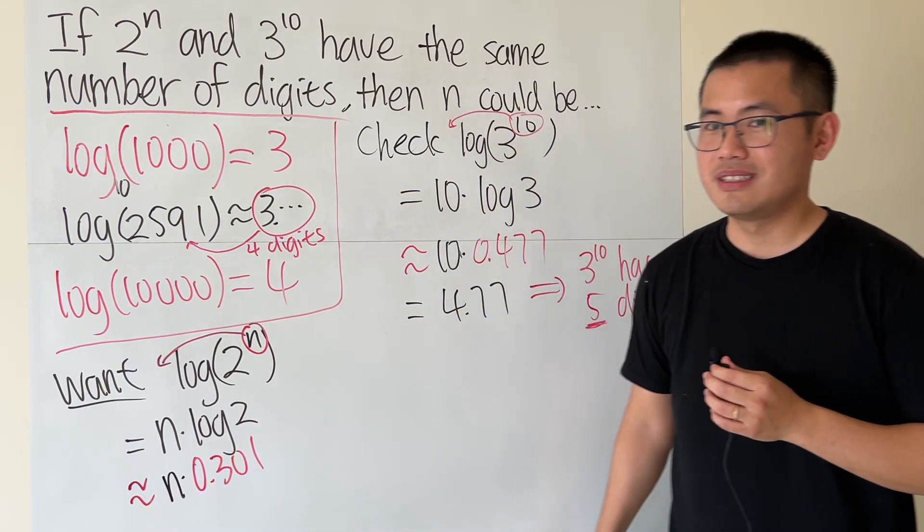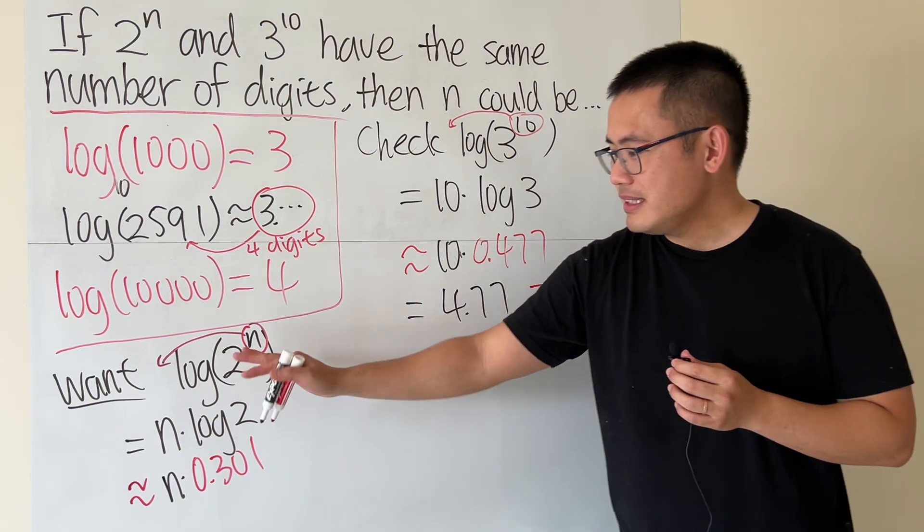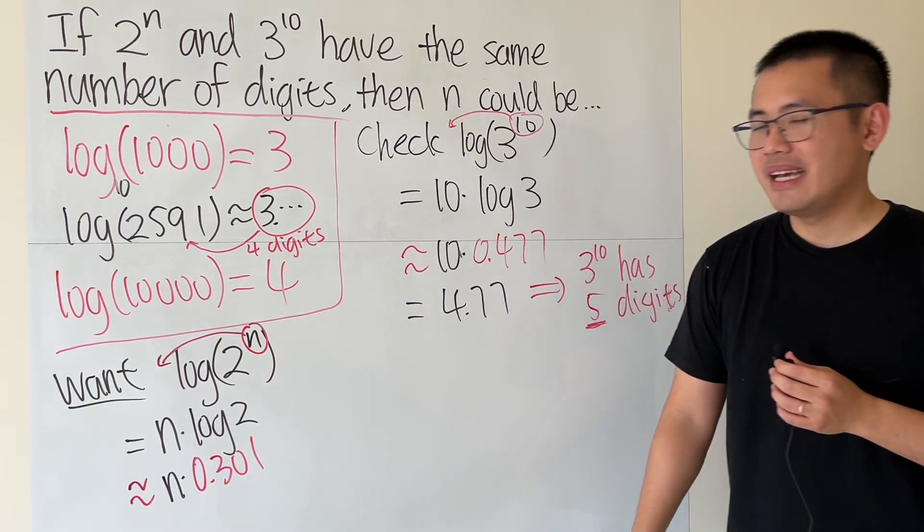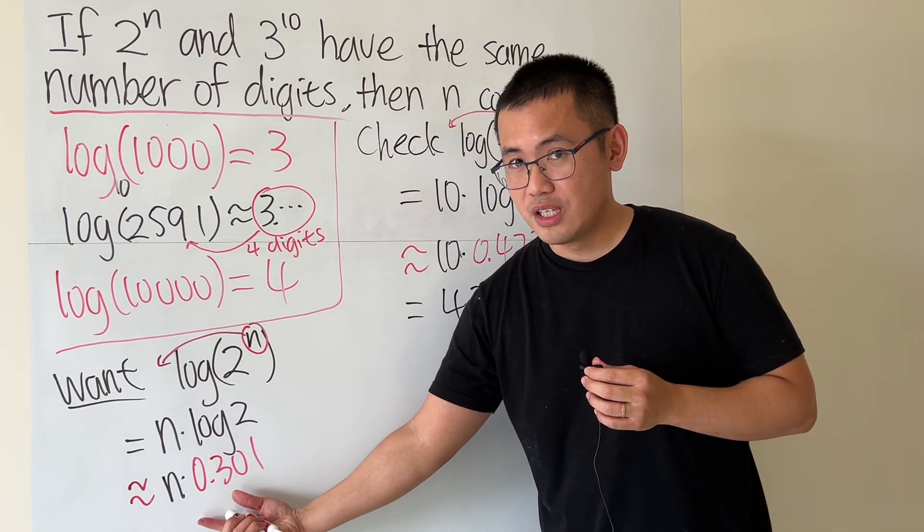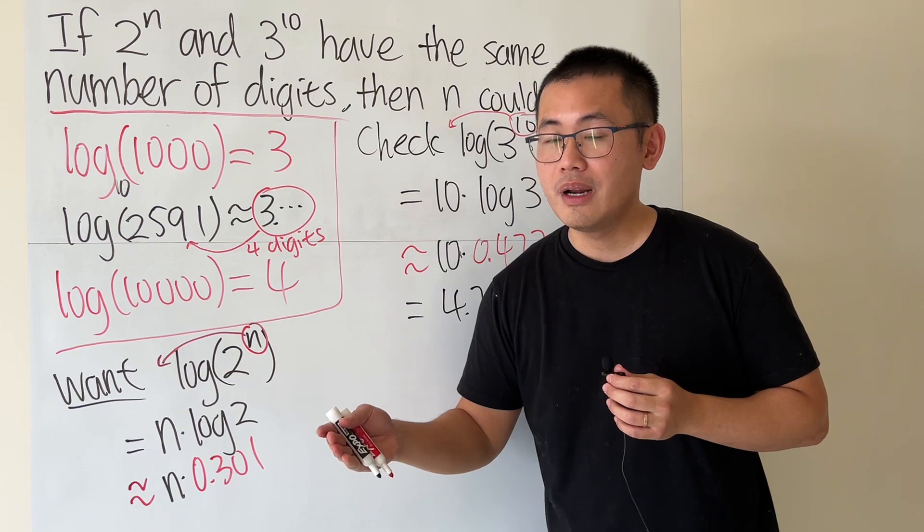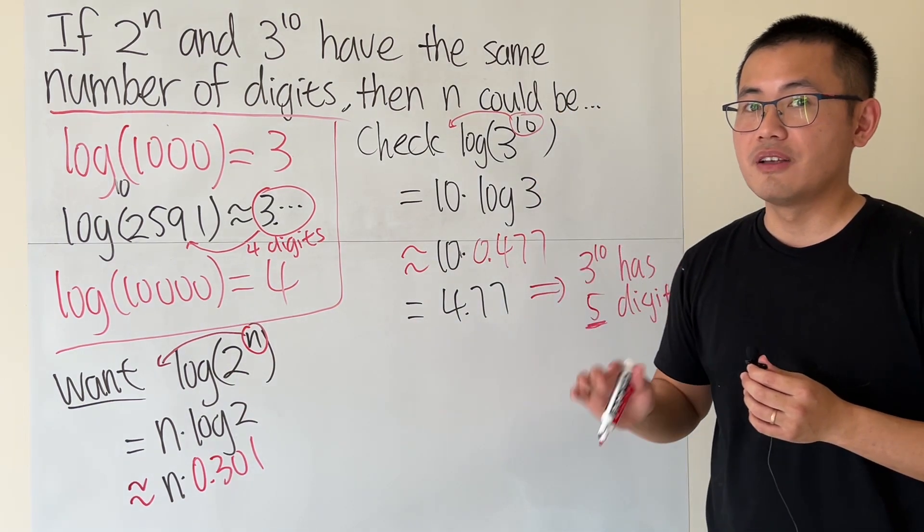Which is 0.301 times n. This is log base 10, so that's why it's 0.301. Now, this expression gives us that, and how do we utilize this? We want to make sure that the result is in between 4 and less than 5. So we can ensure that this right here gives us 5 digits.